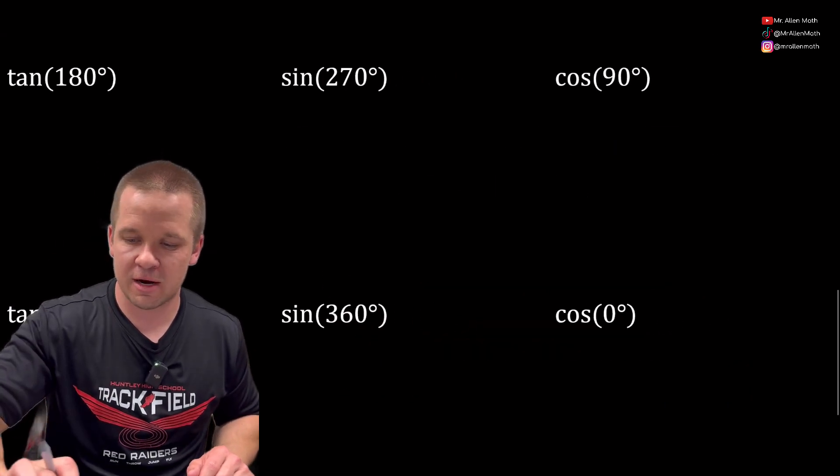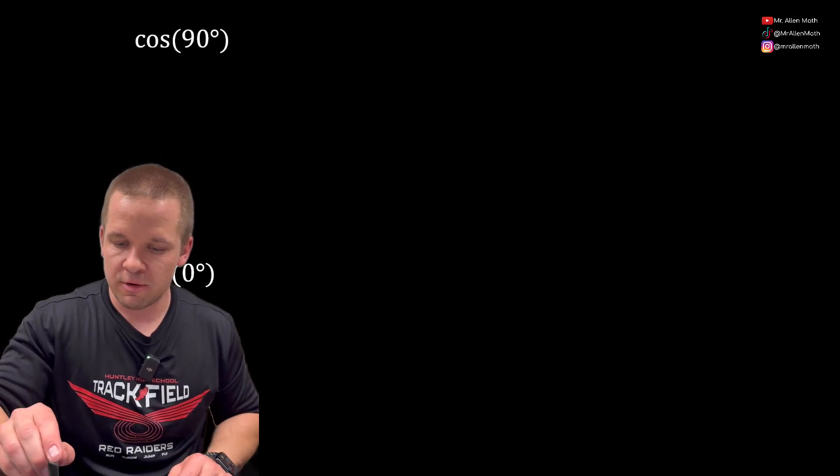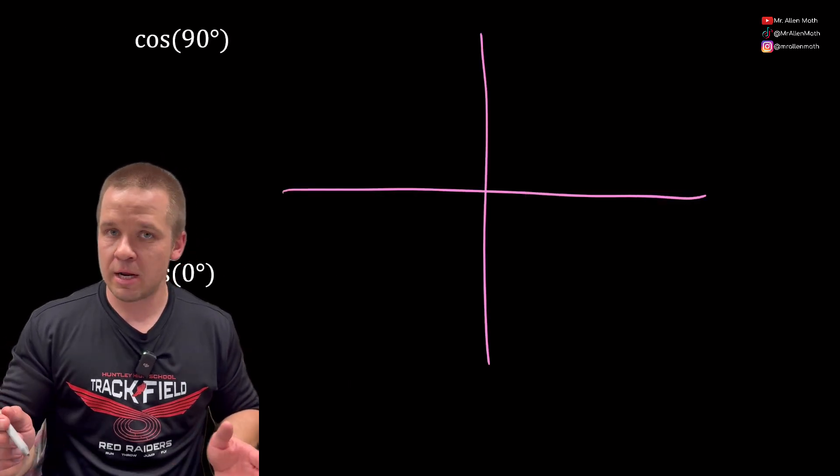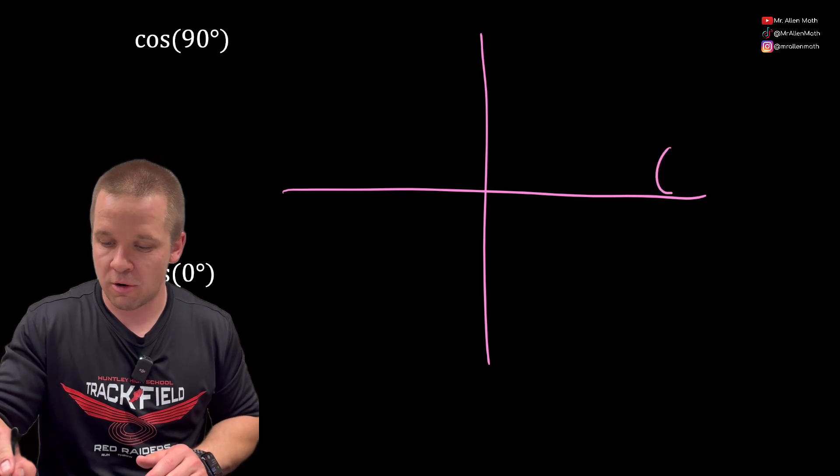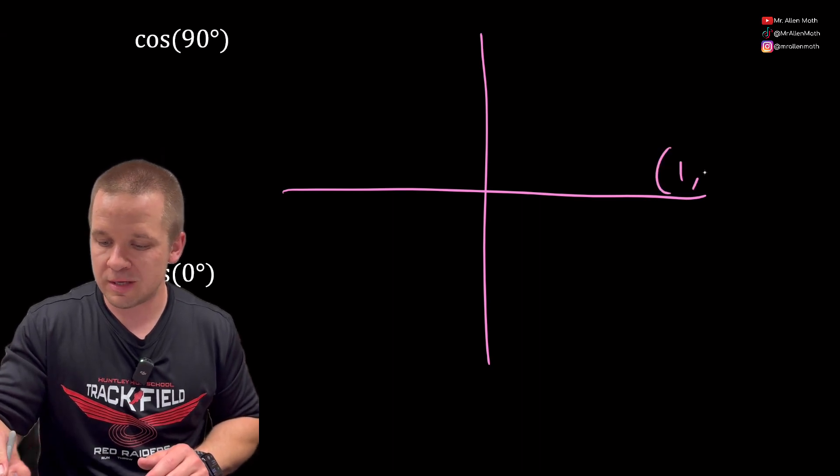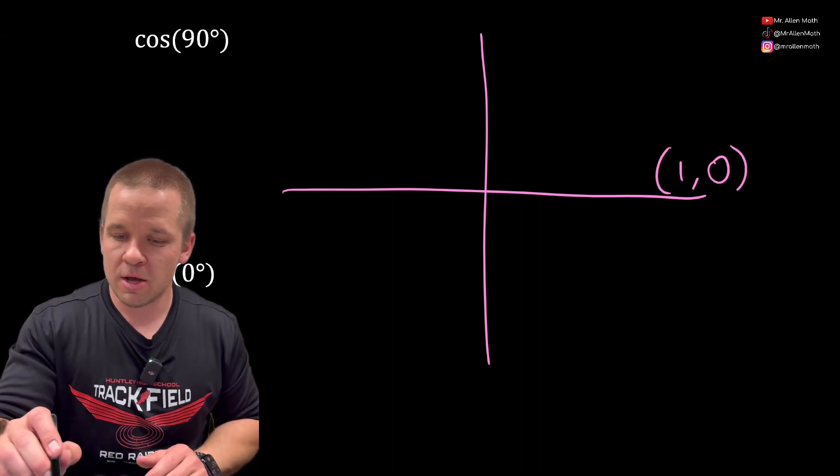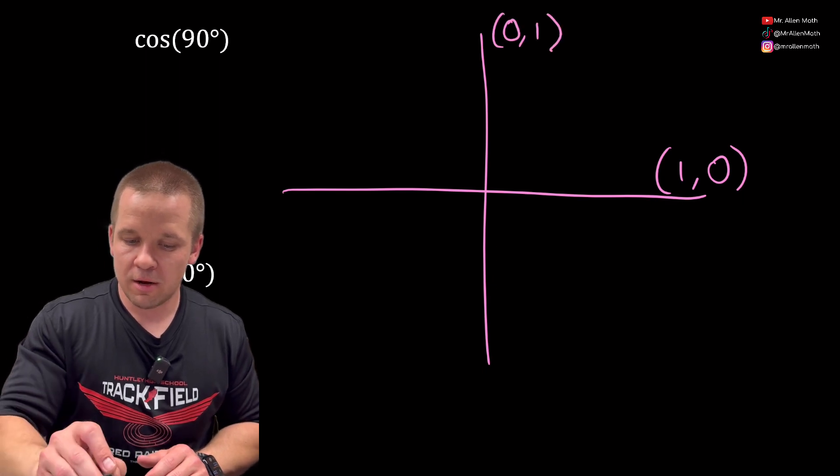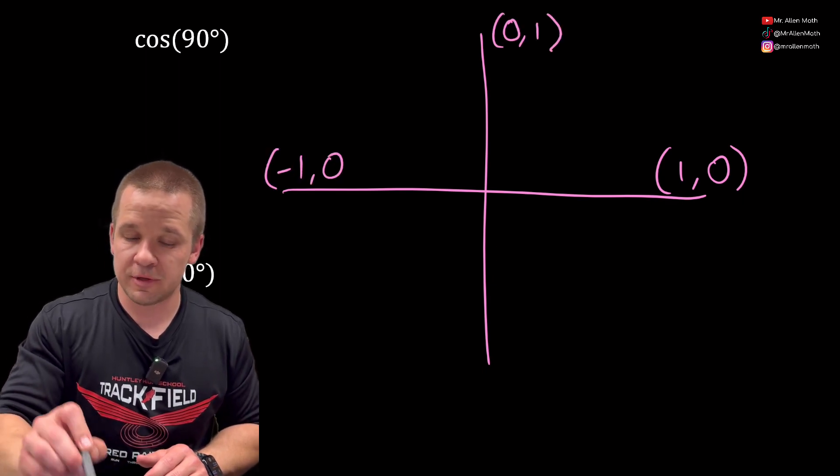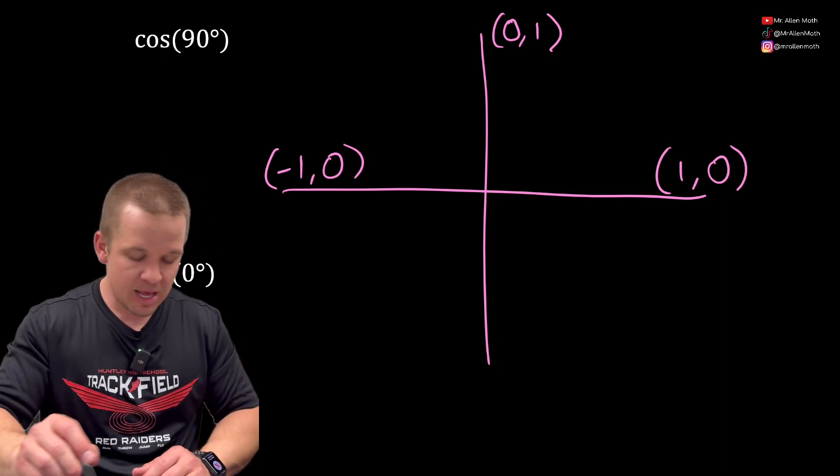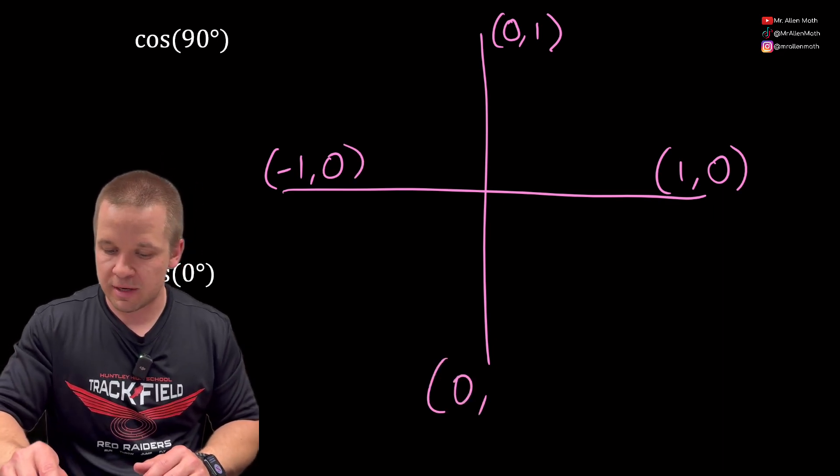So let's refresh that real quick. We're gonna list all of our ordered pairs. Over here I have (1,0), it's x comma y. Up here I've got (0,1). Over here is (-1,0). These are just like points on a graph, right? And then down here I have (0,-1).